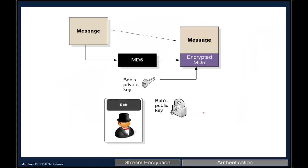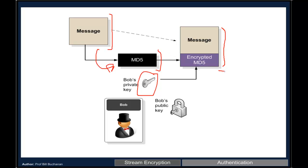Here's a simple example of a digital signature: Bob wants to send Alice an email. He takes the message, hashes it to get an MD5 fingerprint, then encrypts that hash with his private key. He appends this encrypted hash to the message before sending to Alice. This allows Alice to verify both the message integrity and that it genuinely came from Bob.